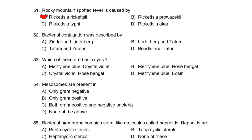52nd Question: Bacterial conjugation was described by Option B: Lederberg and Tatum. 53rd Question: Which of these are basic dyes? Correct Answer: Option A: Methylene blue and crystal violet. 54th Question: Mesosomes are present in Option C: Both gram-positive and gram-negative bacteria. 55th Question: Bacterial membrane contains sterol-like molecules called hopanoids. Hopanoids are Correct Answer: Option A: Pentacyclic sterols.